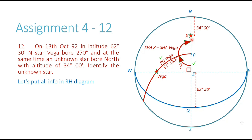I will check the SHA of Vega on 13th October 1992 from the almanac, add this particular angle to it, and obtain the SHA of the unknown star. To identify a star along with SHA, we also need its declination. Let's now see how we find the declination of the unknown star.